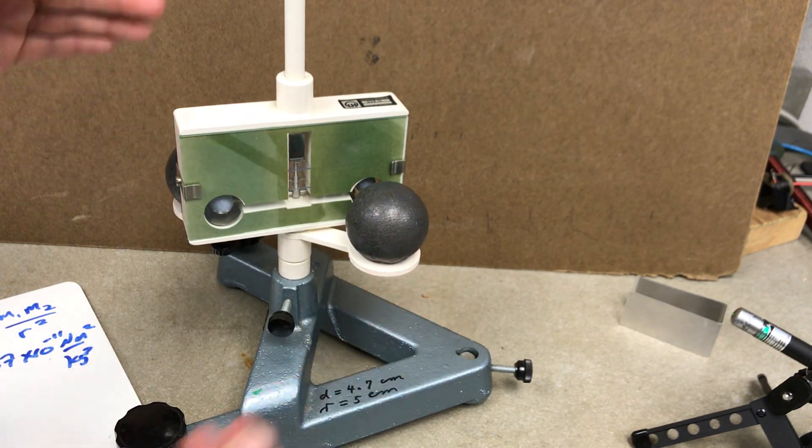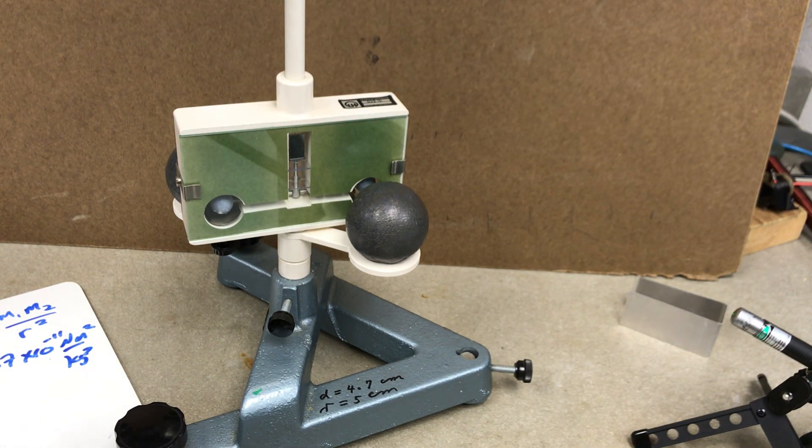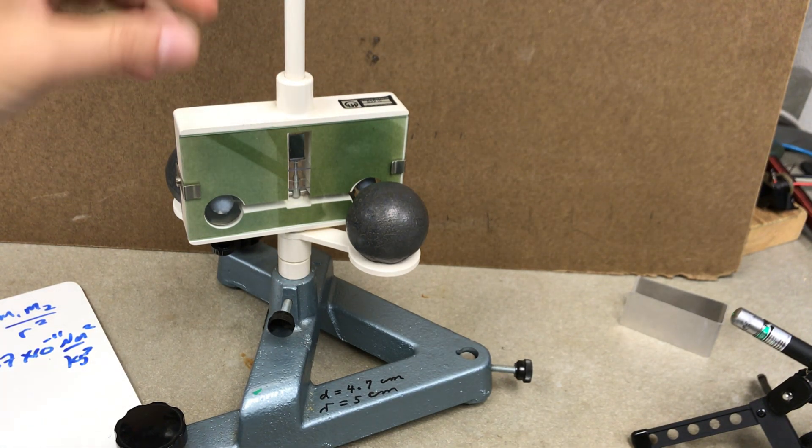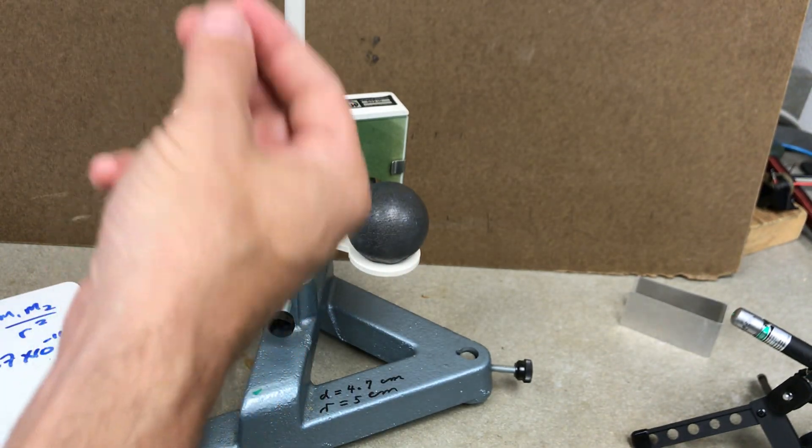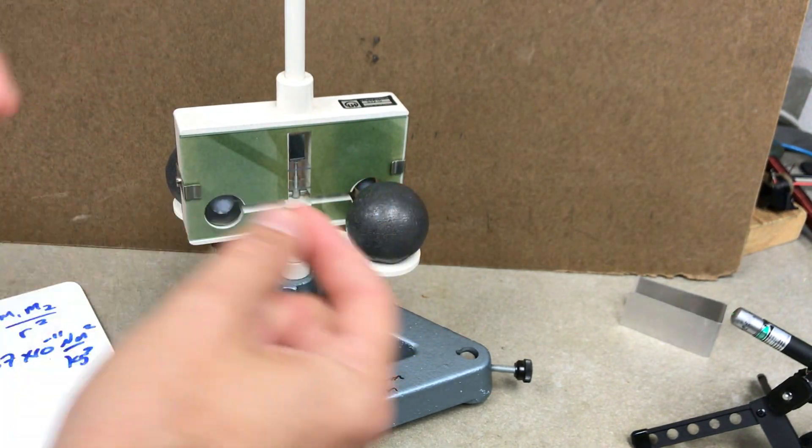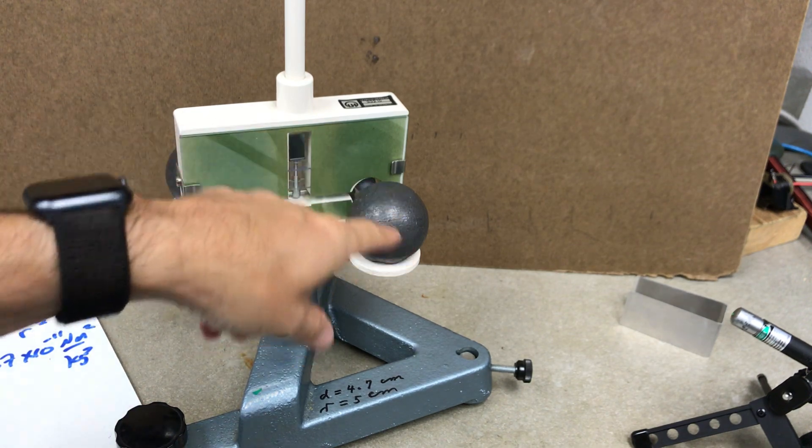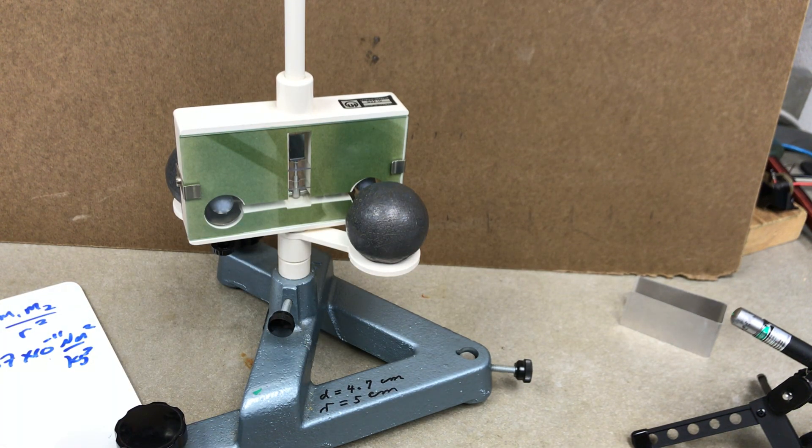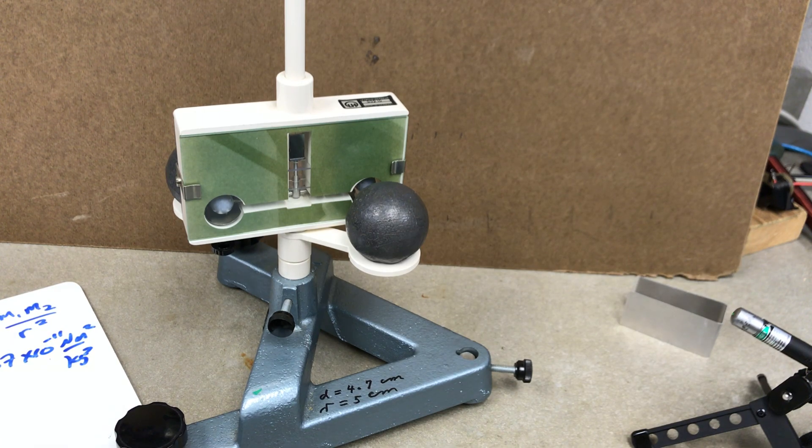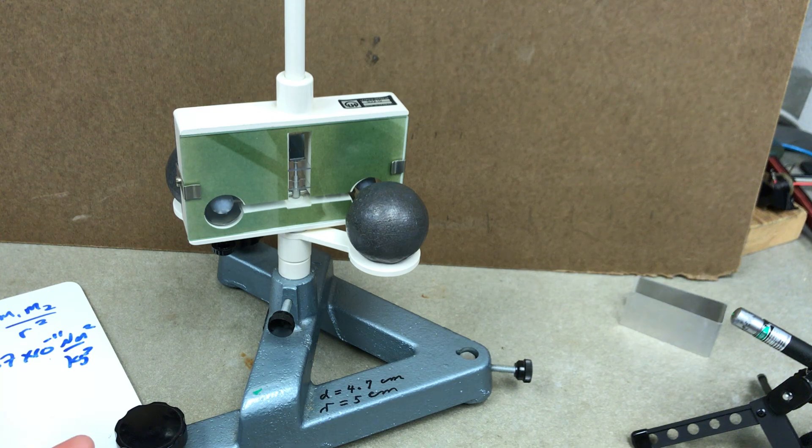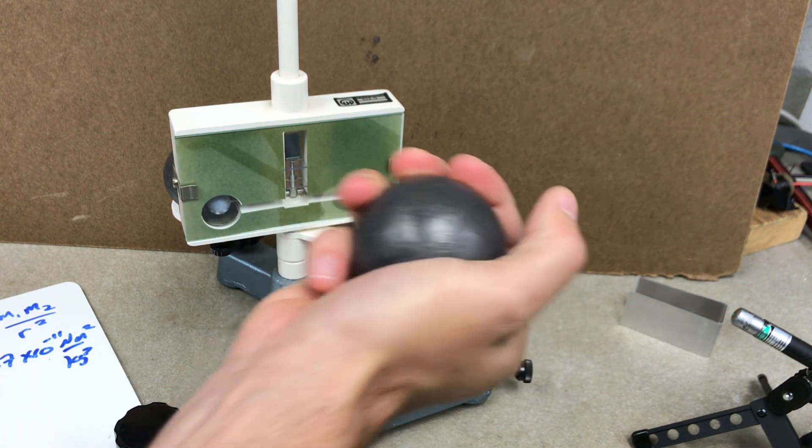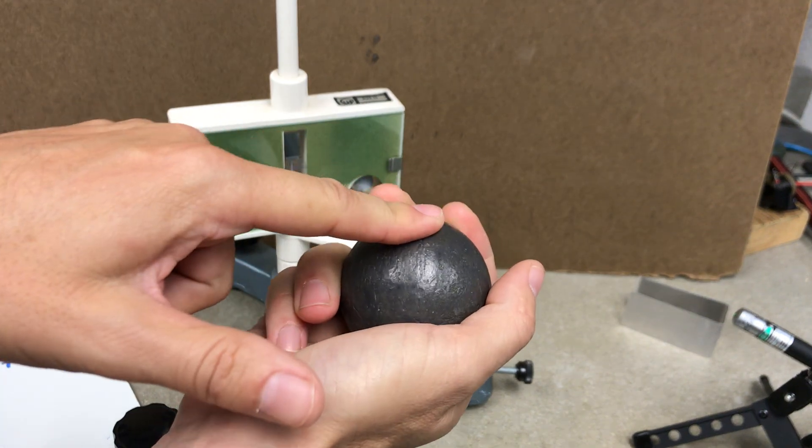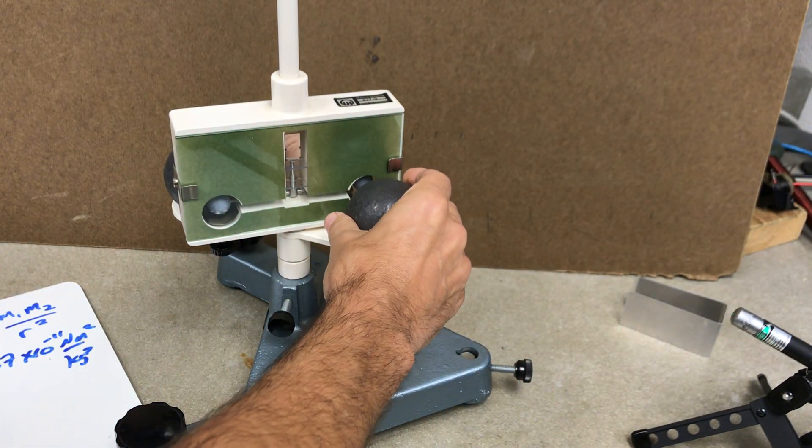If you know the torsional spring constant, how much it takes to twist that cable, then by measuring how much it deflects, you can measure the gravitational force between these masses. And then you can find the gravitational constant. And you can use that to find the mass of the Earth based on weight of objects. Because if I have this mass, it's interacting with the Earth. And if I know that mass of this object and I know the force, then I can find the mass of the Earth.